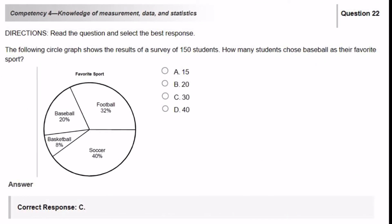The following circle graph shows the results of a survey of 150 students. How many students chose baseball as their favorite sport? So to complete this question, you would have to multiply 150 students by the percent of students that chose baseball.